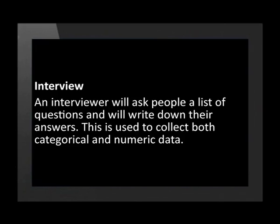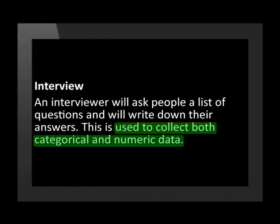In an interview, we call the person who asks the questions the interviewer, and the person who answers the questions the interviewee. An interviewer asks a list of questions and writes down the answers the interviewee gives. This is used to collect both categorical and numeric data. Interviews take longer than other methods, and interviewers can also note observations about body language. Selecting interviewers is therefore a complicated and important task — these people need to be unbiased, meaning they won't have an opinion or prejudice on the topic, as a strong opinion might lead them to try to change the interviewee's mind.